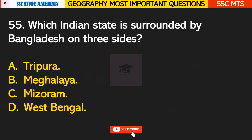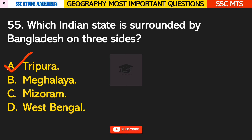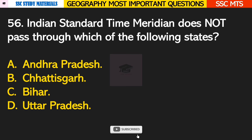Question number 55: which Indian state is surrounded by Bangladesh on 3 sides? Answer A — Tripura. Question number 56: Indian Standard Time Meridian does not pass through which of the following states? Answer C — it does not pass through Bihar.